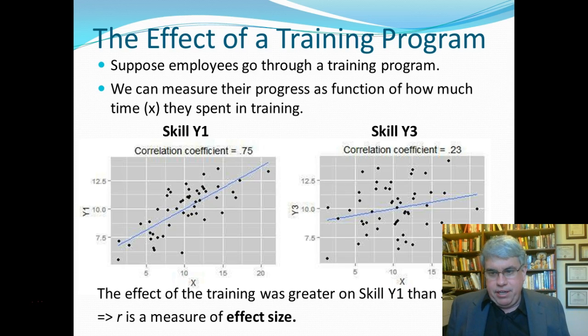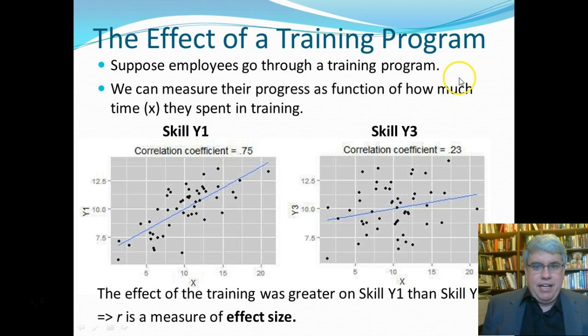The first type of effect size that we see is the correlation coefficient R. Let's take an example. Suppose that employees go through a training program and we're going to measure their progress as a function of how much time they spend in training. So the y-axis is their skill level. Suppose they were taking a training course for online customer service. The first skill might be politeness and the second skill might be how well they actually do helping the customer solve a problem.